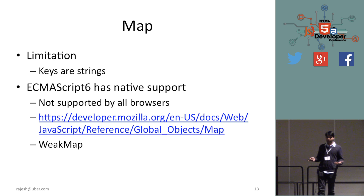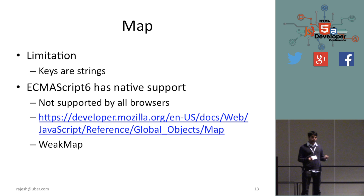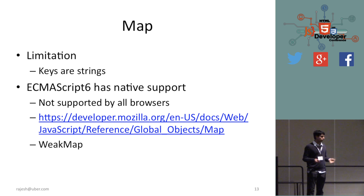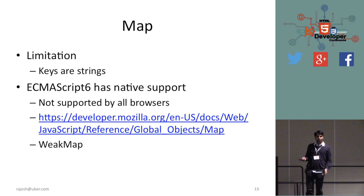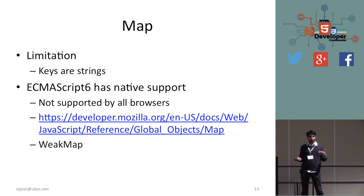One thing with JavaScript's plain object map is it only supports strings as keys — you can't have objects as keys. But ECMAScript 6, already supported by Firefox and Chrome, has a built-in Map that supports objects as keys. ES6 also supports WeakMap, which is similar to Map except you can't iterate over the keys.